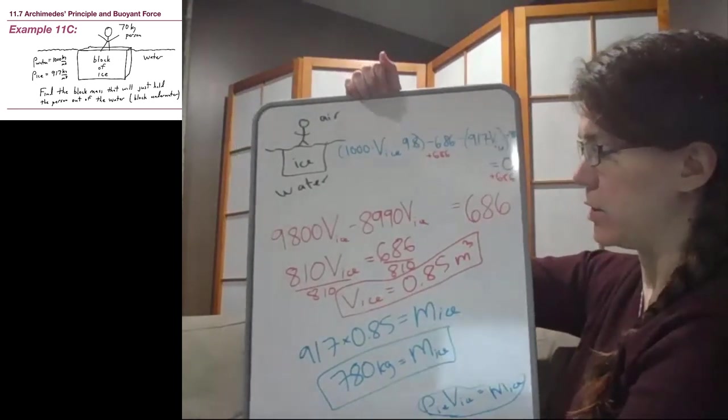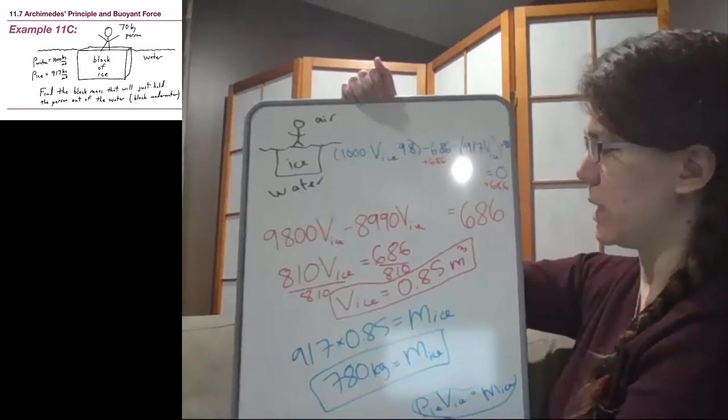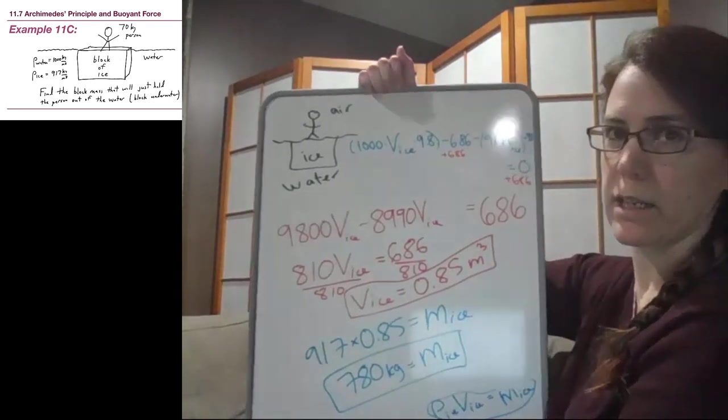Then we plugged in numbers that we had and realized that we needed to think about the fact that density is a way for us to go back and forth between mass and volume if we need to write one in terms of the other. And then we solved for our final value. And you might have had some different rounding here, and that's perfectly fine. I'm just trying to make these numbers kind of simple to look at and think about.